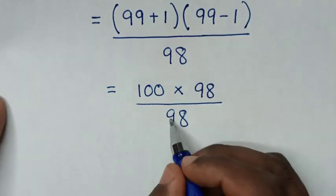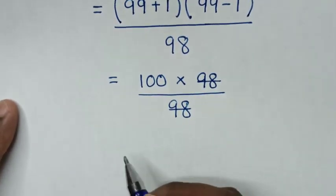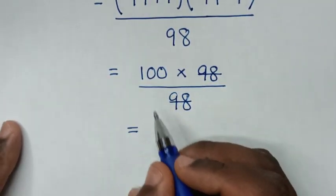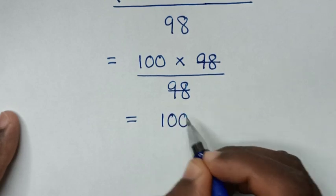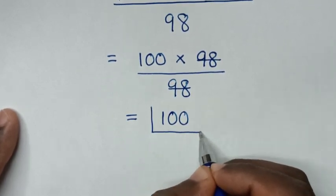In the next step, we'll simplify by canceling 98 with 98, so it equals 100. Therefore, this is our final answer.